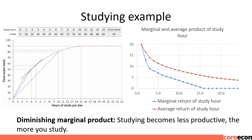Graphing the marginal product and average product curves: the marginal product is shown by the blue line and the average product curve by the red line. They both start off at the same point, because the first hour of study gives 20 extra points — marginal product is 20, and average product is also 20 divided by 1 equals 20. For the second hour, marginal product is 13; for the third hour, 9; for the fourth hour, 8; then 7. The blue line is falling, demonstrating the idea of diminishing marginal product — for each extra hour of study, the grade increases by smaller and smaller amounts.